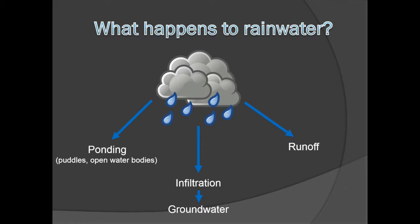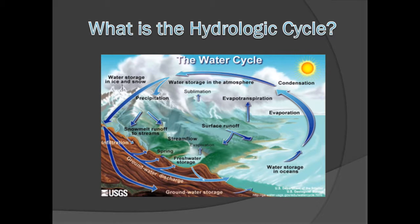Why is groundwater so important to us? Does anyone drink well water? Even if you drink municipal water, do you know the source of your drinking water? If your water comes from an open body of water like a river, do you think that it's connected in any way to groundwater? The answer is yes. Streams, rivers, lakes, ponds, the oceans, and groundwater are all connected to each other and rainwater through a process called the hydrologic cycle.